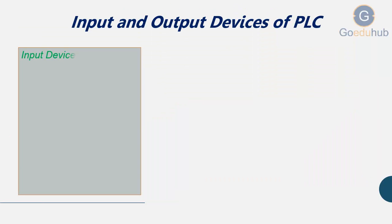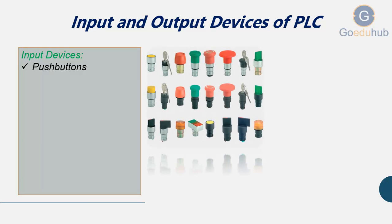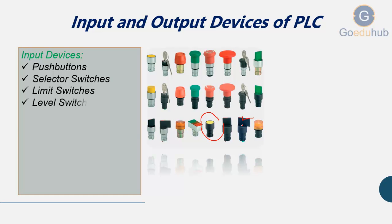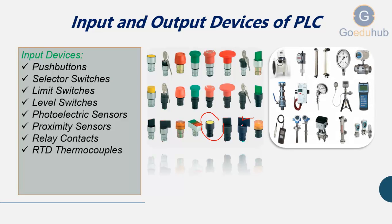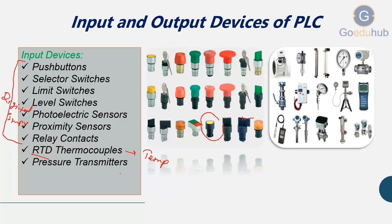Looking at input and output devices of PLC — for input devices we have push buttons, selector switches, limit switches, level switches, photoelectric sensors, proximity sensors, relay contacts, and RTD thermocouples. These are the digital inputs. RTD stands for Resistance Temperature Detector, and thermocouples are used to sense temperature. We also have pressure transmitters, flow transmitters, and level transmitters, which are analog sensors.